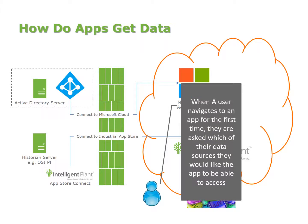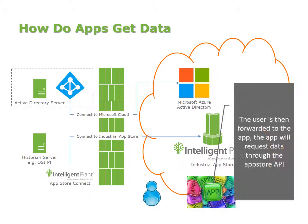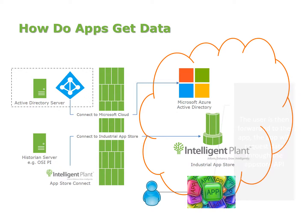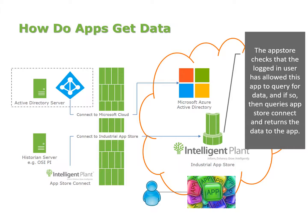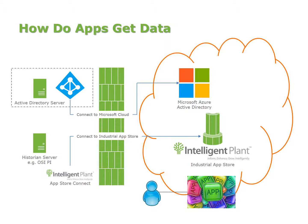A user will navigate to an app for the first time, and since the app doesn't have access to their data, the App Store will ask which data sources they would like the app to be able to access. This is similar to when you go to an app in your Android or iPhone App Store and it says 'this app requires these permissions' — it's exactly the same step but from a data perspective rather than a device permissions perspective. The user is then forwarded to the app after specifying what they're happy to share, and the app can request data through the App Store API. The App Store checks that the logged-in user has allowed this app to query for data, and if so, queries App Store Connect and returns the data back to the app.